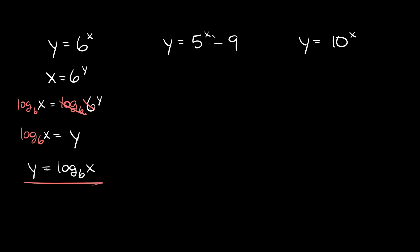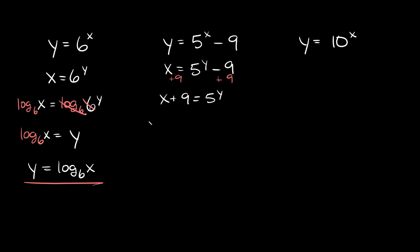Let's try another one. We have y is equal to 5 raised to the x minus 9. Again, let's flip our variables and write it as x is equal to 5 raised to the y minus 9. We're trying to solve for y, so let's get rid of this 9 by adding 9 to both sides. So we get x plus 9 is equal to 5 raised to the y. In order to get rid of this base, the 5, because we're trying to solve for y, we're gonna take the log base 5 of both sides.